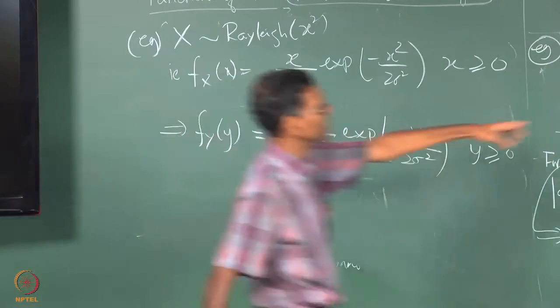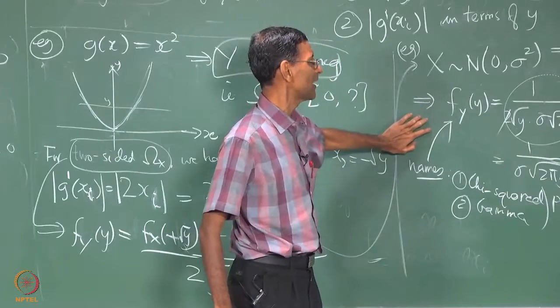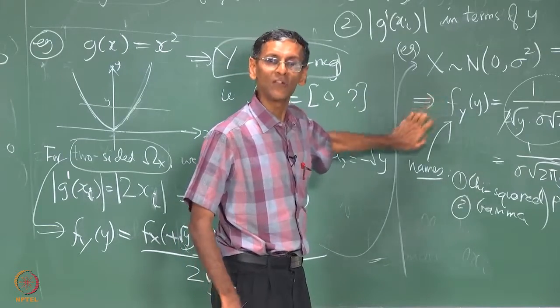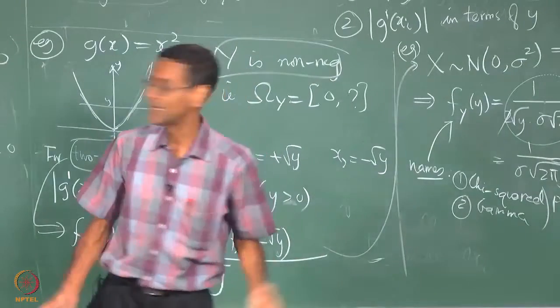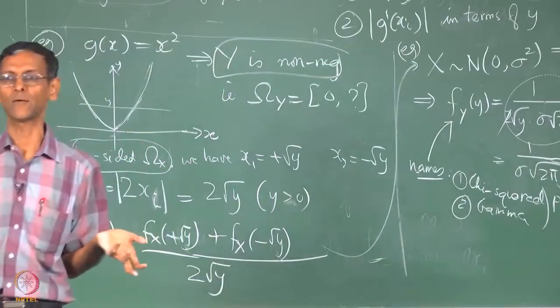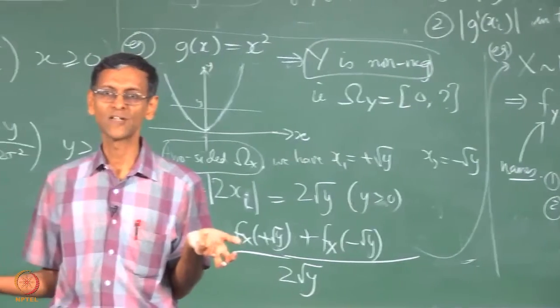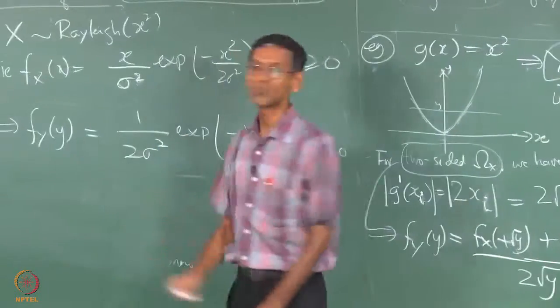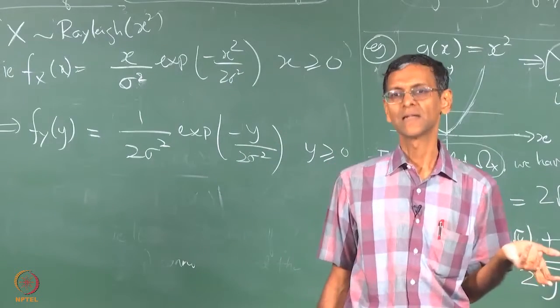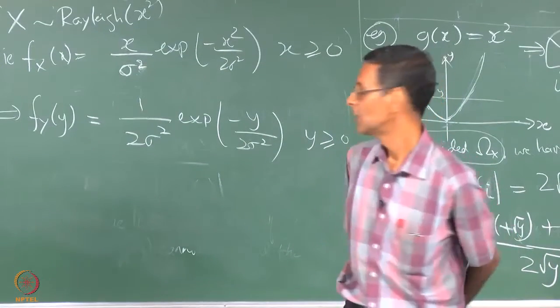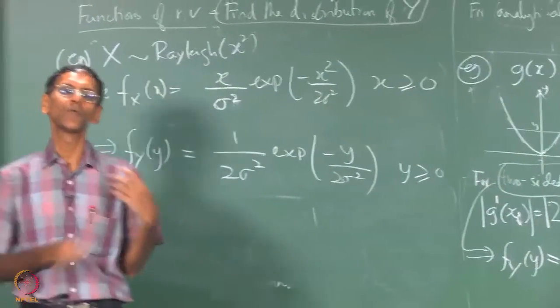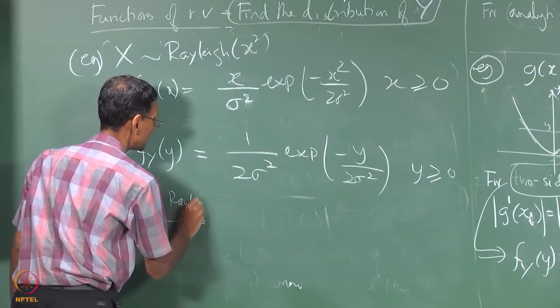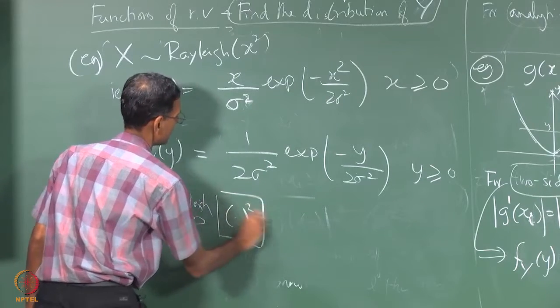You can see for yourself that this is a valid pdf and now I can write y greater than or equal to 0 because the offending value of 0 has got cancelled out. This thing had infinite value at y equal to 0 so I did not want to set y equal to 0 out here. But still this is a valid pdf. Here I do not have this exponential pdf that is only discontinuity at y equal to 0. So we have this important property now. Rayleigh upon squaring becomes exponential.